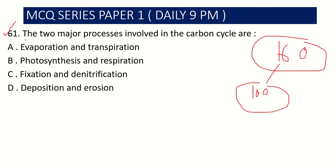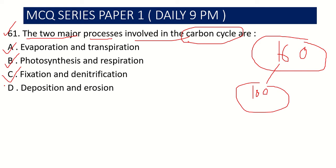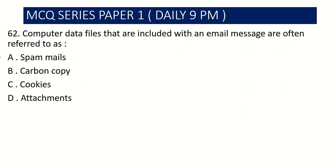Question number 61: The two major processes involved in the carbon cycle are — Option A: evaporation and transpiration, Option B: photosynthesis and respiration, Option C: [skipped], Option D: deposition and erosion. The two major processes in the carbon cycle are photosynthesis and respiration, so Option B is the correct answer.